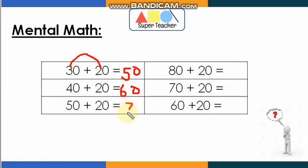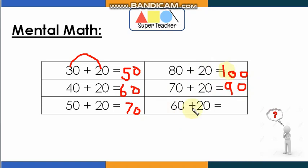50 plus 20: 5 plus 2 equals 7, add the zero — 70. Well done! 80 plus 20: 8 plus 2 equals 10, add the zero — 100. Well done! 70 plus 20: 7 plus 2 equals 9, add the zero — 90. Finally, 60 plus 20: 6 plus 2 equals 8, add the zero — 80. Well done everyone!